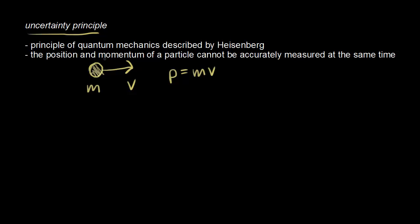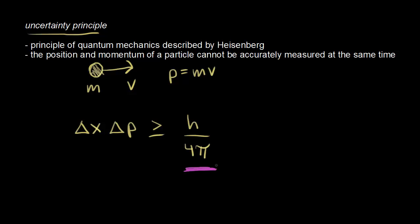Let's look at a mathematical description of the uncertainty principle. Delta x is the uncertainty in the position, and delta p is the uncertainty in the momentum. The product of these two must be greater than or equal to Planck's constant h divided by four pi. You might see something slightly different in a different textbook — it depends on how you define things. The point is, the product of the two uncertainties must be greater than or equal to some number, so the uncertainties are inversely proportional to each other.